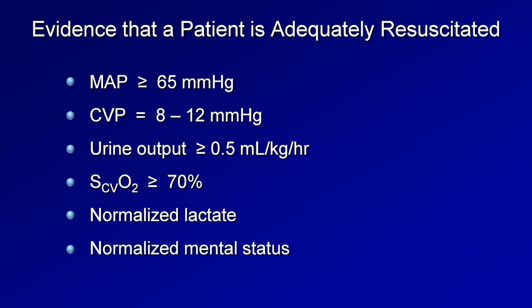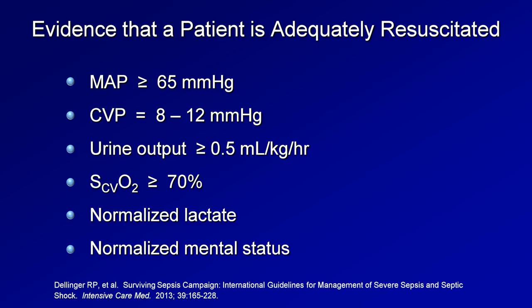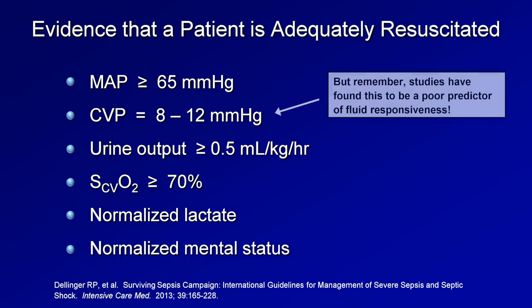Normalized mental status if abnormal to begin with is also a marker. These common metrics — the first five of which are taken directly from the Surviving Sepsis Campaign's guidelines — are used in practice. However, remember that studies have shown that CVP in particular is a poor predictor of fluid responsiveness. Despite an earnest search, no explanation can be offered as to why the Surviving Sepsis Campaign still recommends using CVP as a guide here.